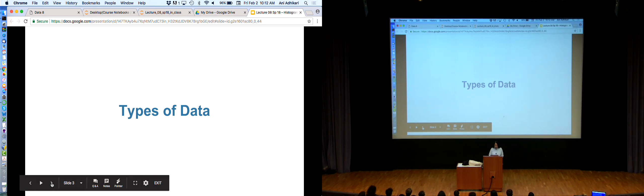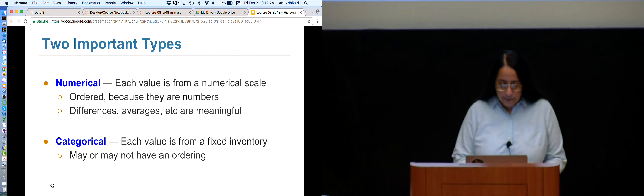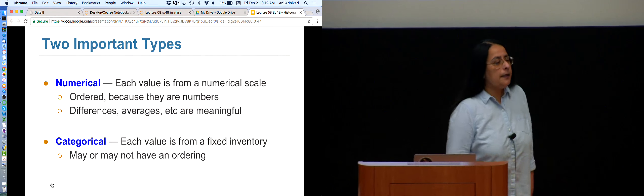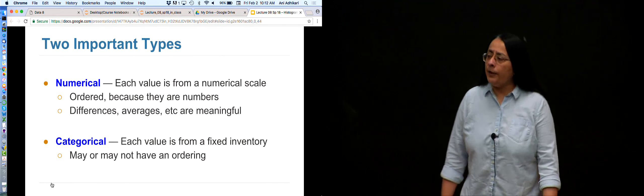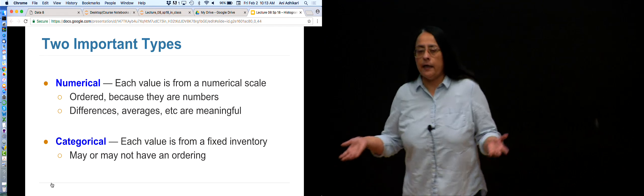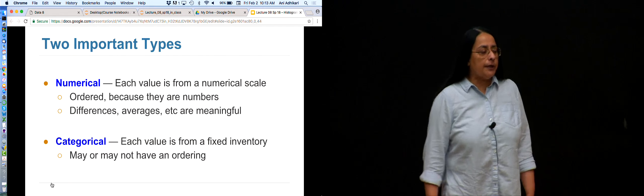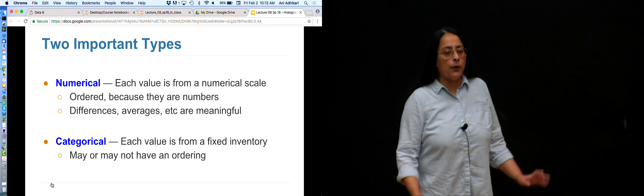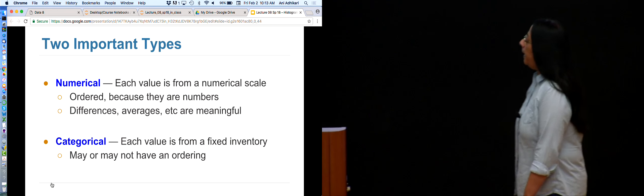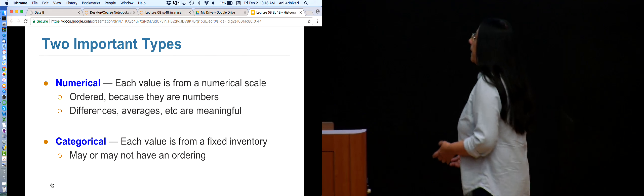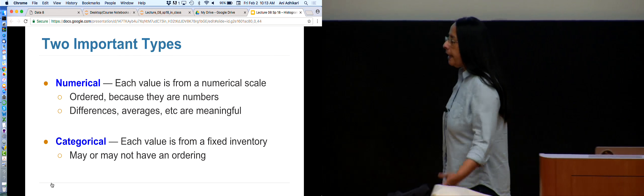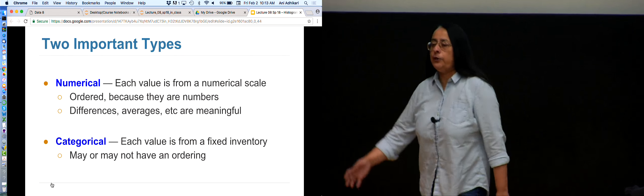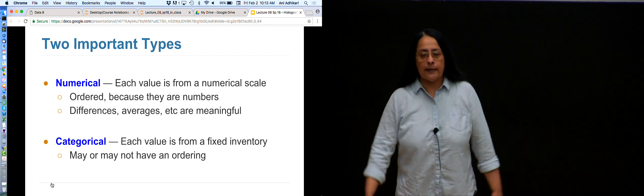Types of data. Two common types are numerical and categorical. Numerical is just data that are numbers: heights, weights, temperatures, number of students in a class. Being numbers, they are subject to the rules that govern numbers - they have relations to each other. 15.2 is bigger than 13.